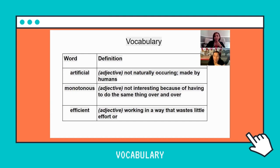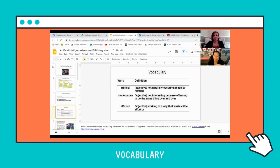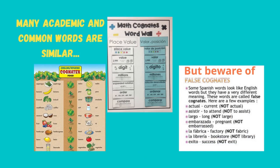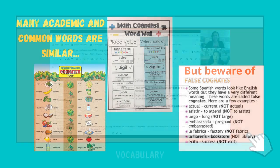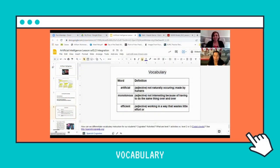Something that can help with that is looking for cognates — building up any kind of relationship between the target word and what students already know in their home language or languages. Cognates are really, really important. That makes students feel heard, and that what they bring is valuable. They already know things.